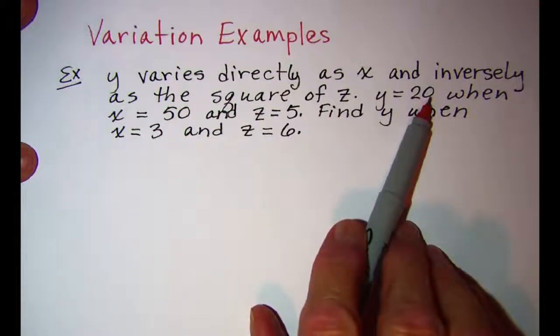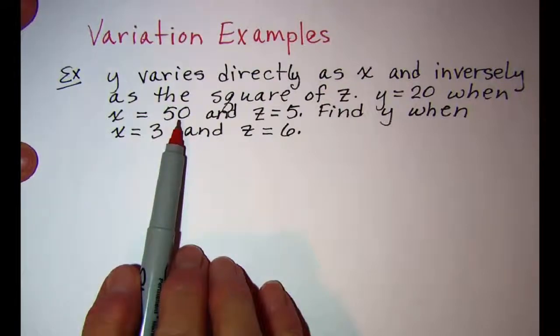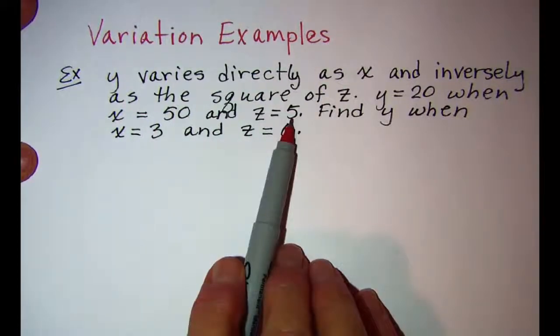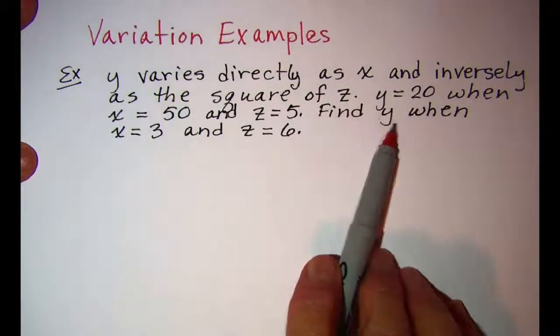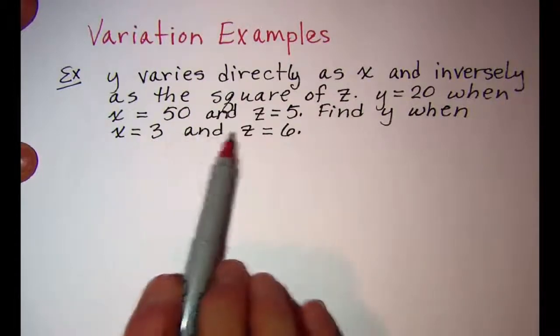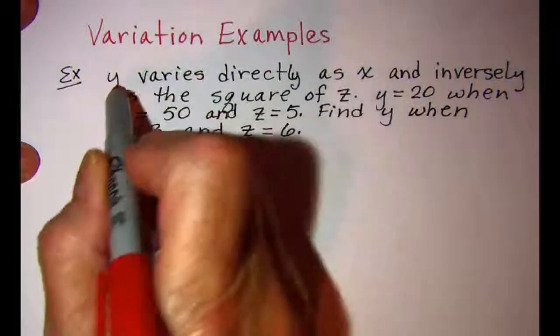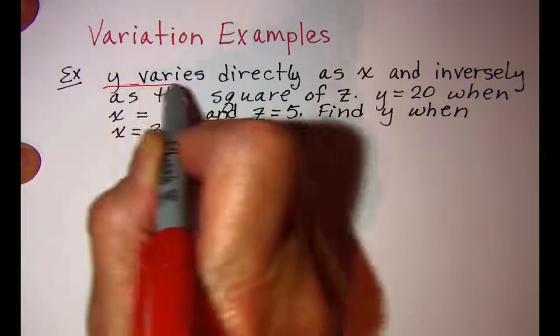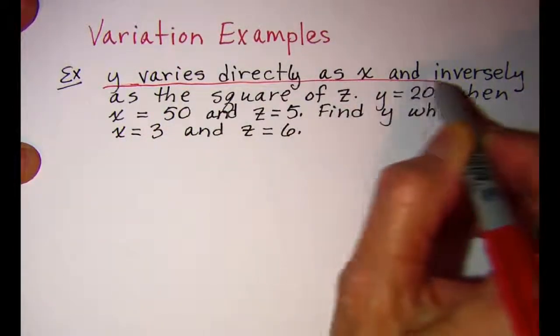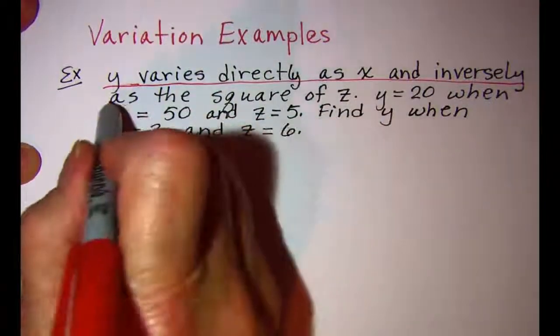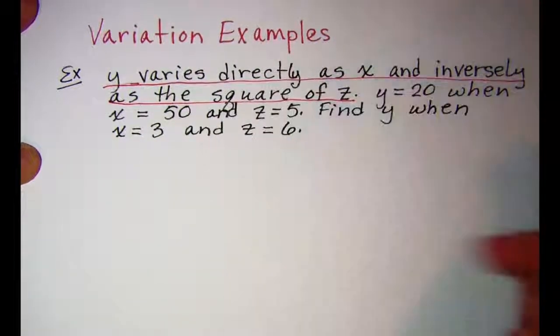y equals 20 when x equals 50 and z equals 5. Find y when x equals 3 and z equals 6. Our first step would be to write the equation that translates this first part of the sentence.